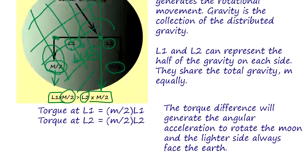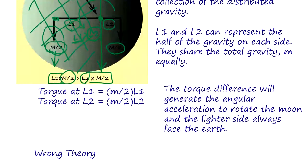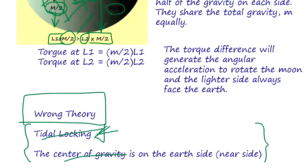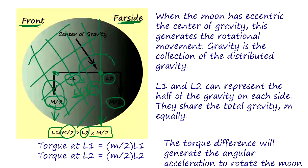So this is the correct way to understand why the moon is facing only one side. There are wrong theories around like tidal locking or center of gravity on the earth side. There are many things you see on the internet. They are all wrong. The tidal locking theory came out when they didn't know that the moon's center of gravity is eccentric. Once you know the center of gravity is not in the middle, then it's easy to understand why it shows only one side.